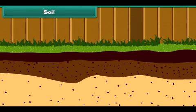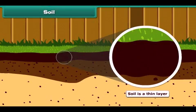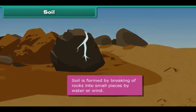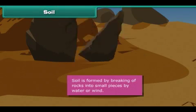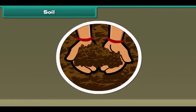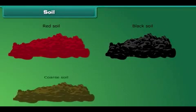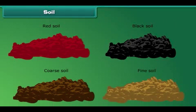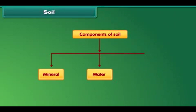Now we move on to soil. Soil is a thin layer of the earth's crust. It is formed by the breaking of rocks into small pieces by the influence of water or wind. Soils are of different types such as red soil, black soil, coarse soil, and fine soil. Minerals, water, and air are the three important components of soil.